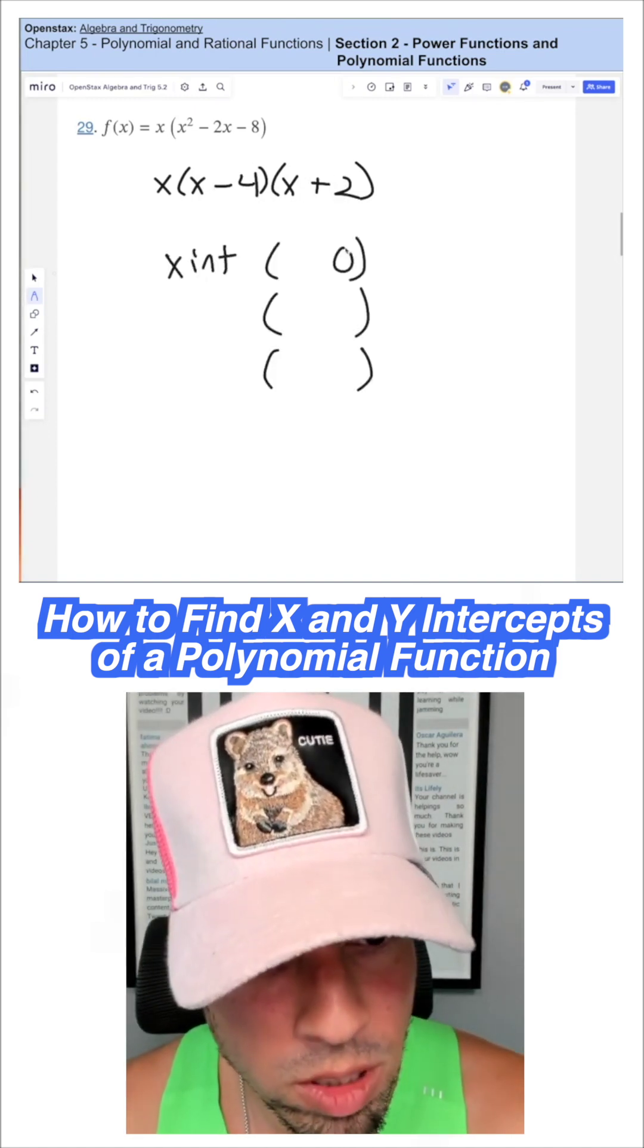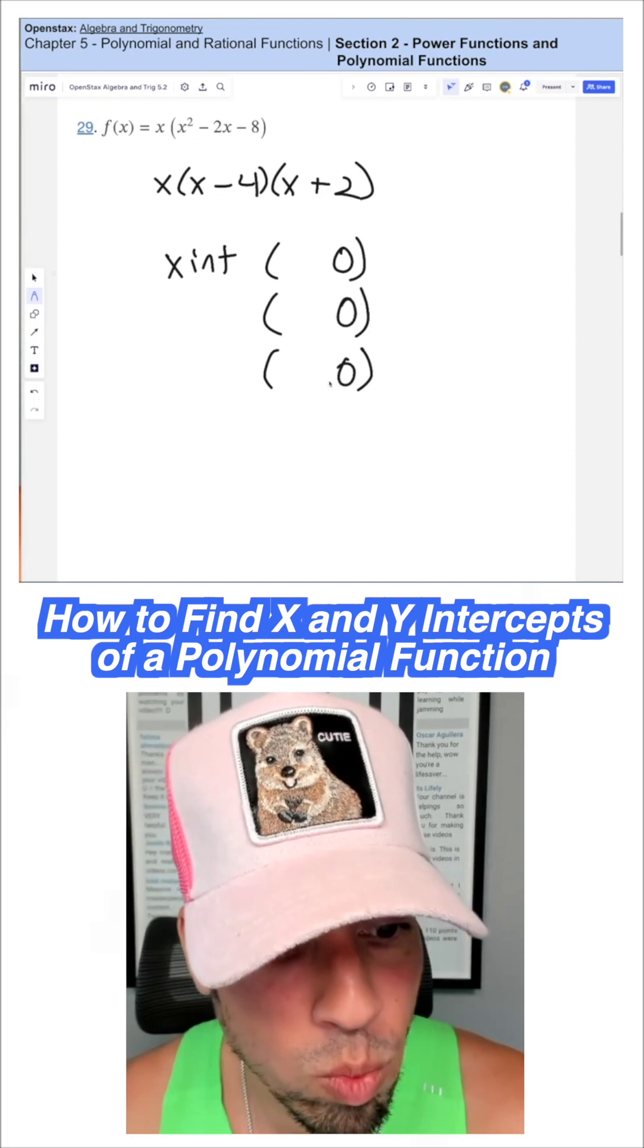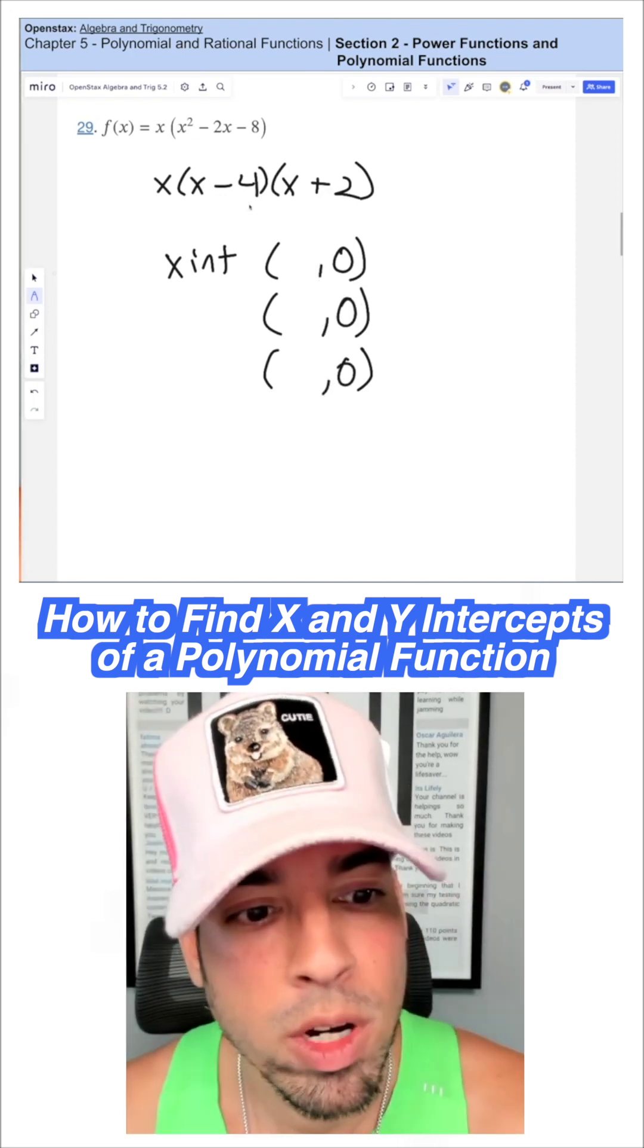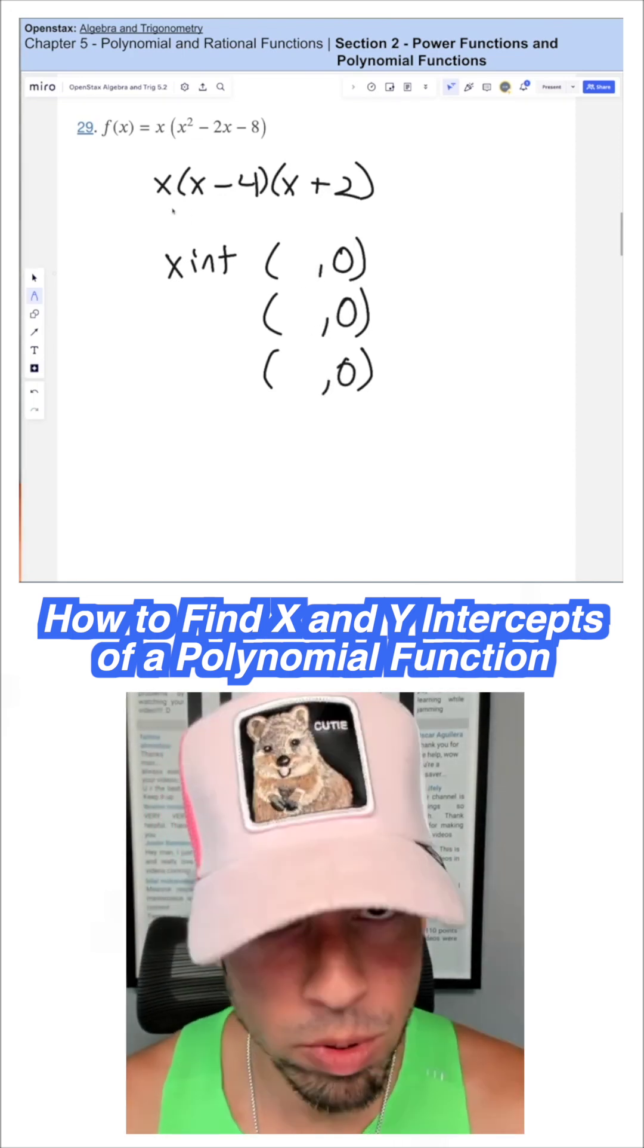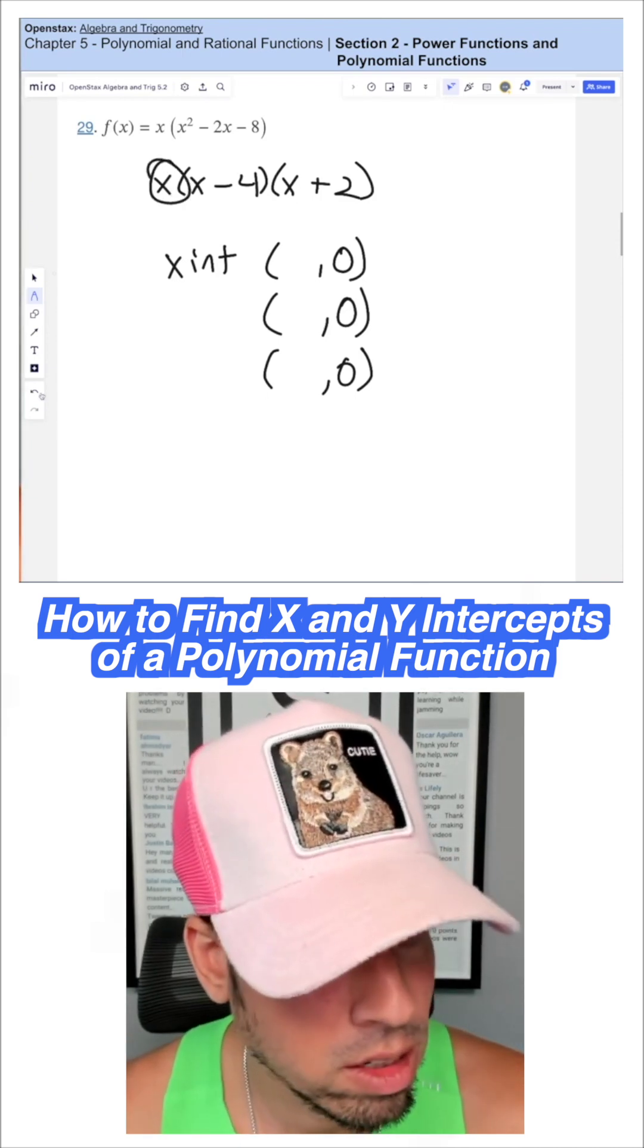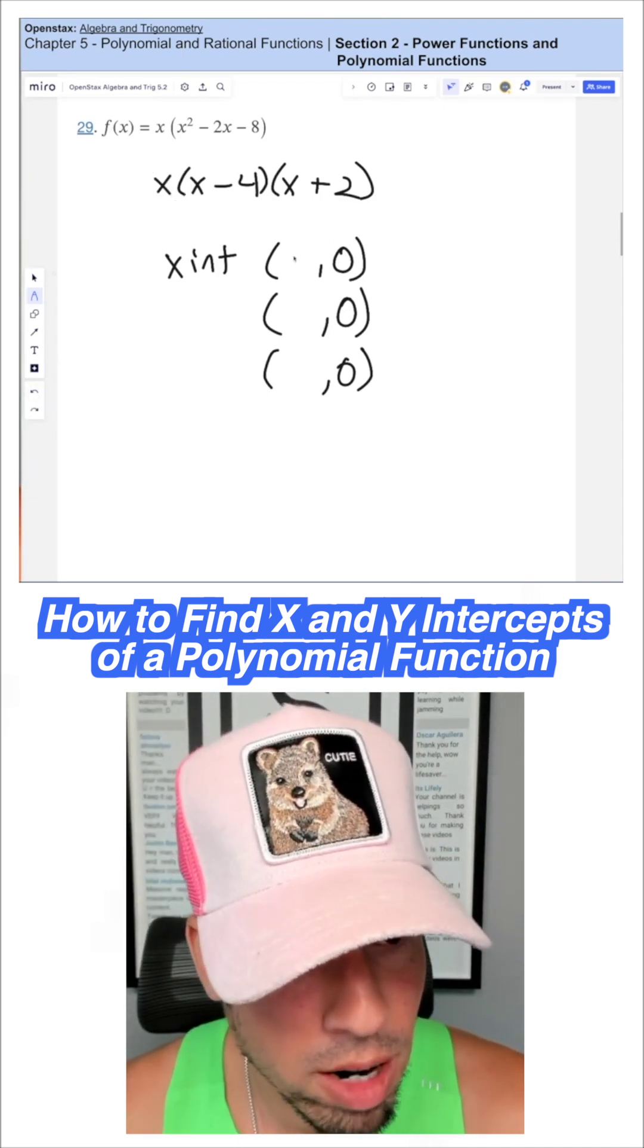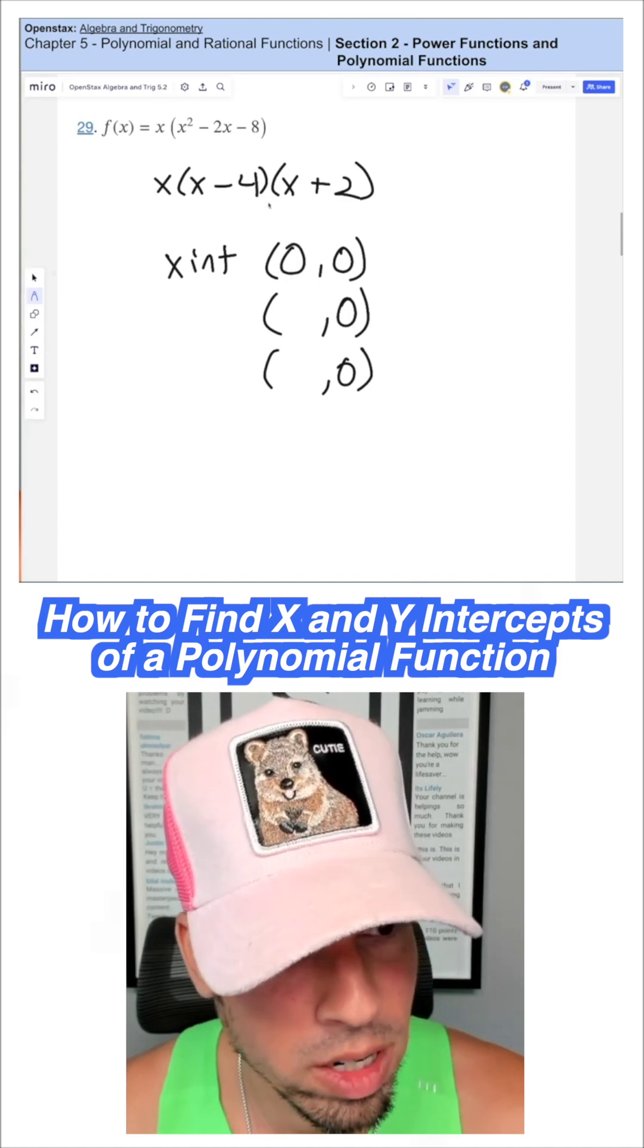So again, for the x-intercepts, it's what's going to zero this out, meaning what's going to produce a y value of zero. So what you'll notice here is there's actually going to be three values of x. First, I can make x zero. That's going to make that one zero, it's going to zero everything out. So (0, 0) is one x-intercept.